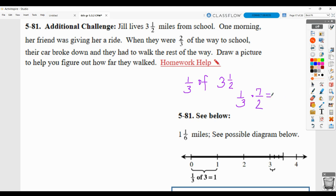So the denominator 2 times the whole number 3 plus the numerator 1 would give you 7 over the original denominator of 2. So when you multiply across, 1 times 7 is 7, 3 times 2 is 6, you get 7/6. That's an improper fraction, which changes to 1 and 1/6. So the answer is 1 and 1/6 miles. And again, make sure you're showing some type of diagram to represent the distance.